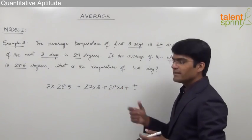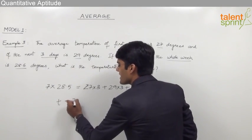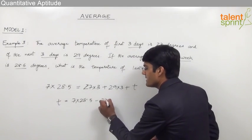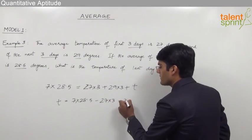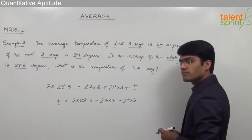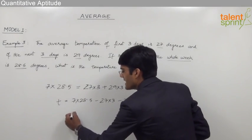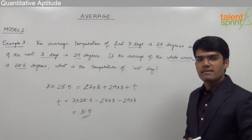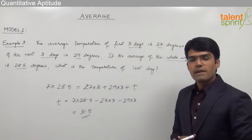So by solving this equation, we can say that T should be equal to 7 into 28.5 minus 27 into 3 minus 29 into 3. On solving this, we get the answer as 31.5 degrees. So we can say that the temperature of the last day should be 31.5 degrees.